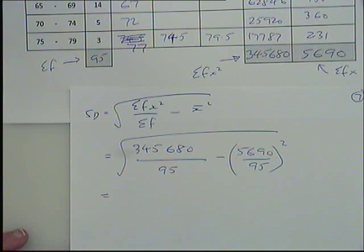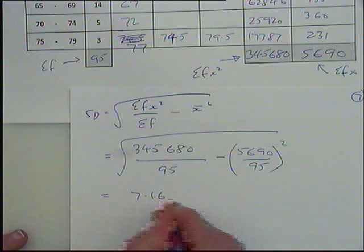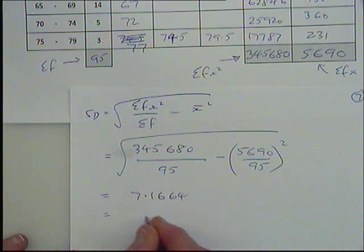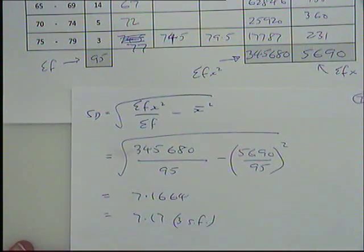We're trying to work out the standard deviation, James. Have you done it? Yeah. What have you got? So you haven't got it. Shouldn't be zero. That's right, well done. 7.16. I've got 7.1664 written down here. So three significant figures, yeah, 7.17.